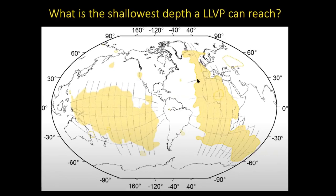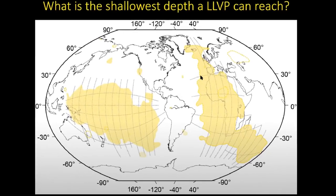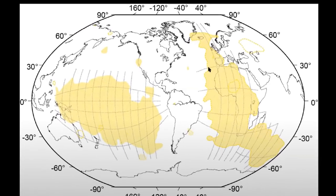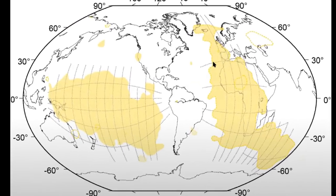The Africa blob may have been rising in recent geological time. This may explain the elevating surface topography and intense volcanism in eastern Africa.